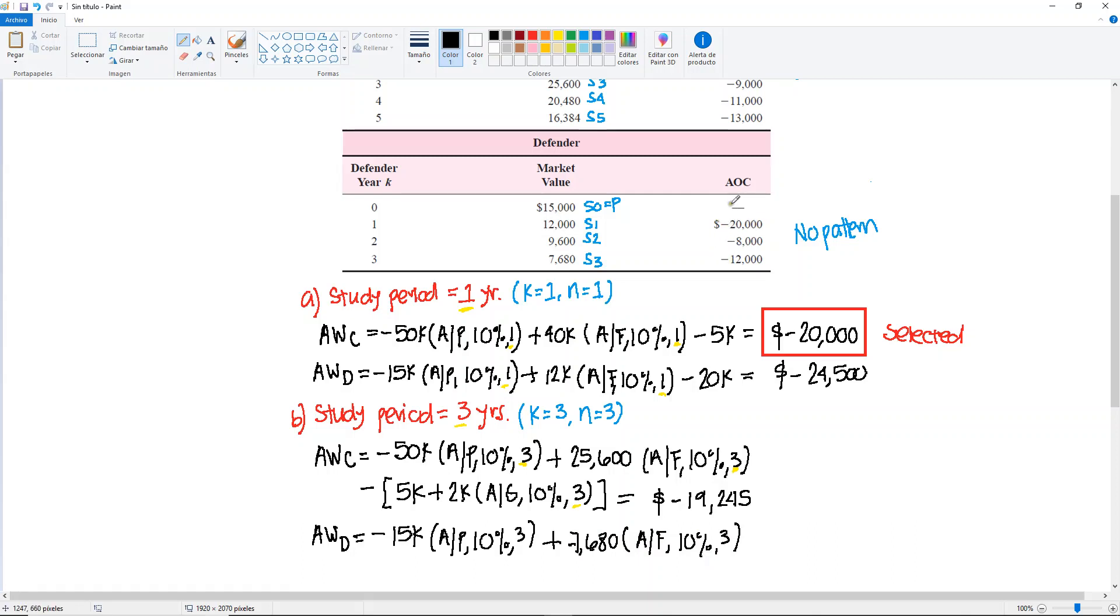And then we set that this one has no pattern, so we must move all three of these to year zero individually, add them up, and then distribute uniformly amongst the three years. So for this, we would have minus the first one, 20,000. Find P given F, 10%. This one is one year away. Then the second one,